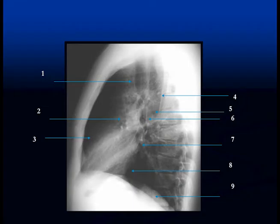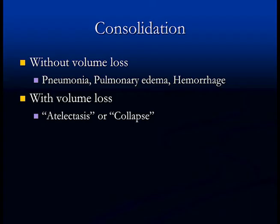Look at the spine as well — going down the spine you'll see that it gets blacker from the top to the bottom. This is normal. When you have an area of consolidation this will change. Finally, look at the retrosternal space, which should be uniformly black.